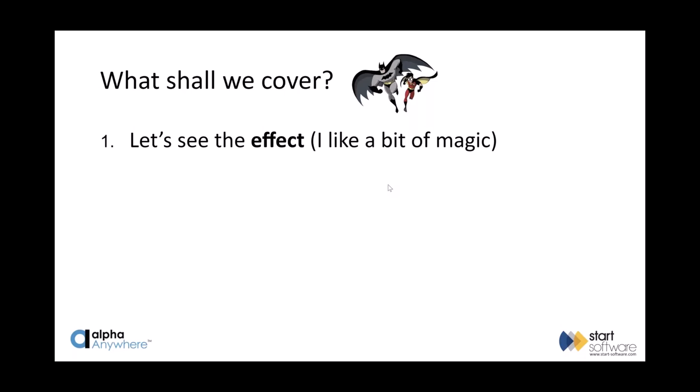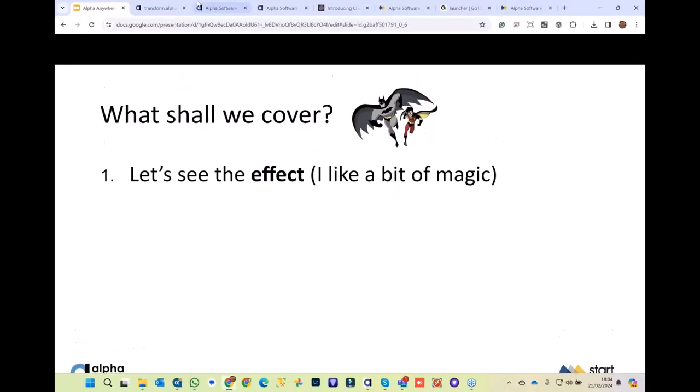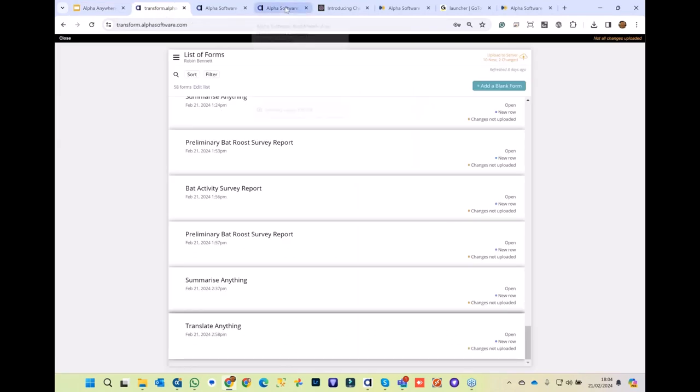We're actually talking about bats today. We're working with a bat surveying company in ecology consultancy, and something we wanted to do for them in their Transform-based application — I thought AI can help with this. This presentation has a bit of bat in it and a bit of ChatGPT. Like magic, there's an effect and then there's the method — let me show you the effect first, and then we'll talk through the method.